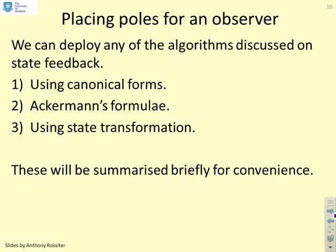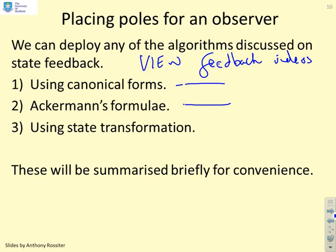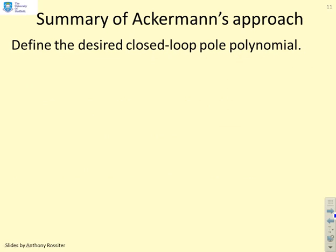How do we place the poles for an observer then? We can deploy any of the algorithms discussed on state feedback. View the feedback videos because we're not going to do it again because it's exactly the same. We'll just give a quick summary here. You can use canonical forms, you can use Ackermann's formula, you can use state transformation. And we'll just illustrate two very quickly so you get the idea.